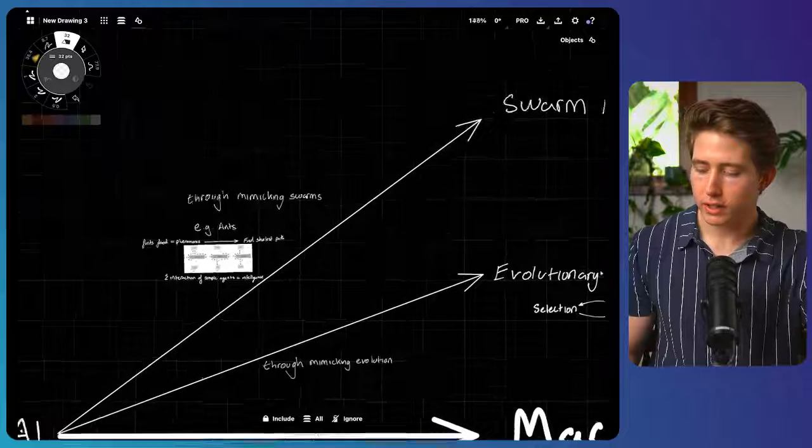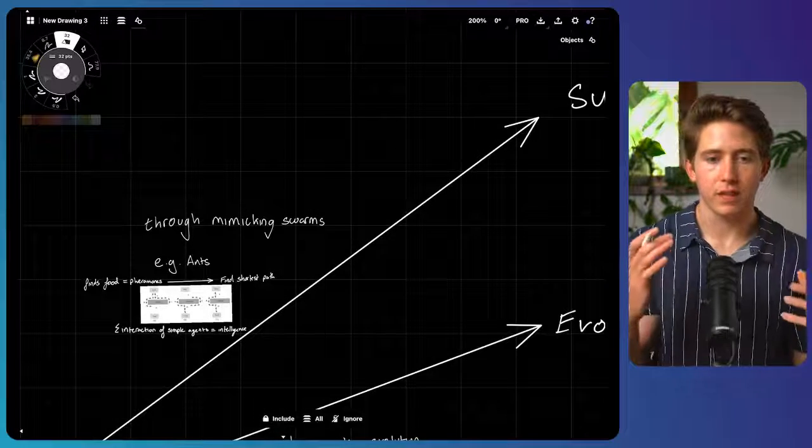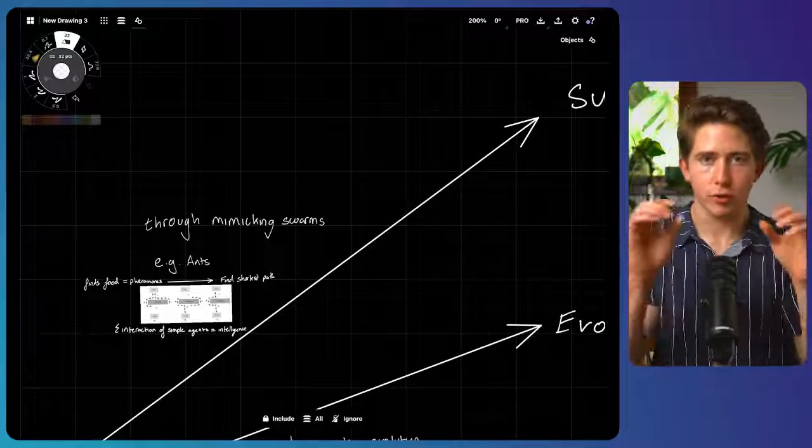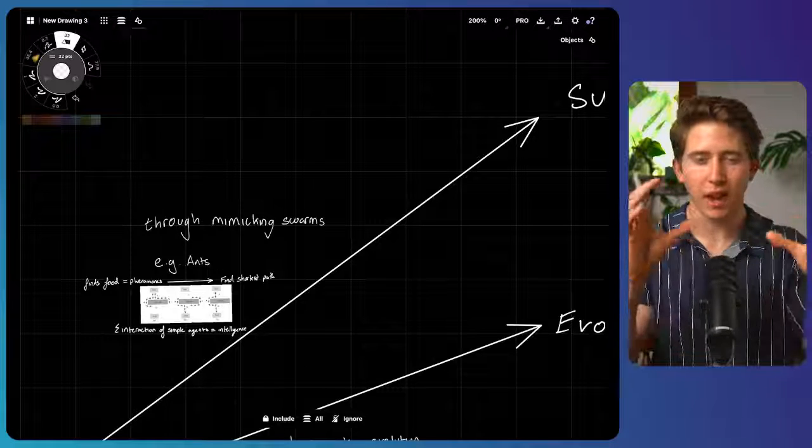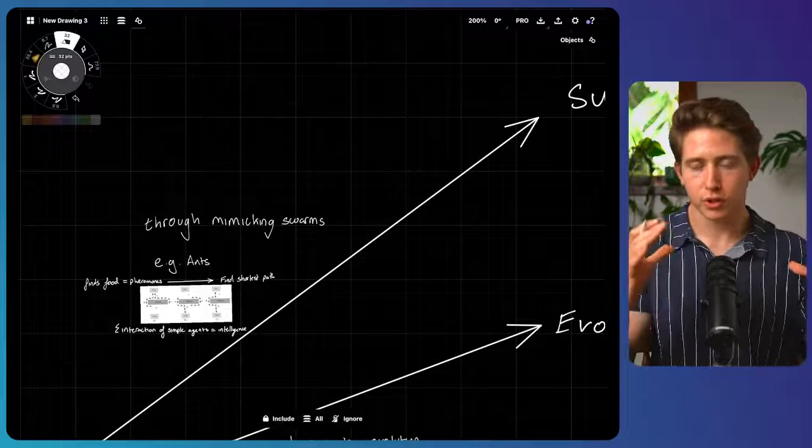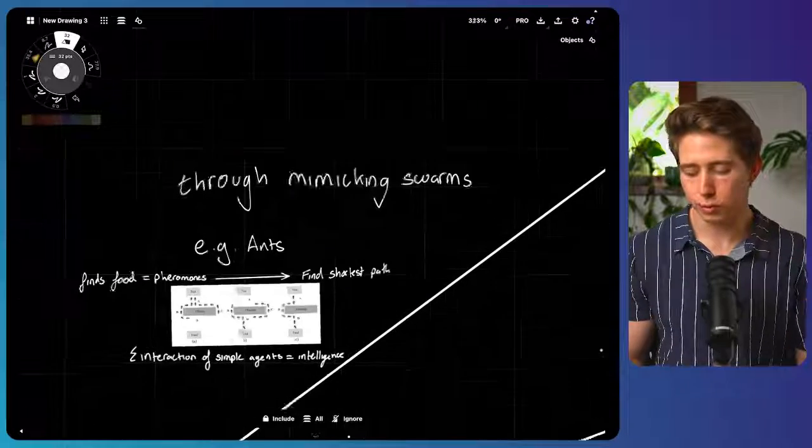The first one is when we emerge intelligence from the interaction of groups of simple agents, small units which are independent of each other. And these are what we call swarms.